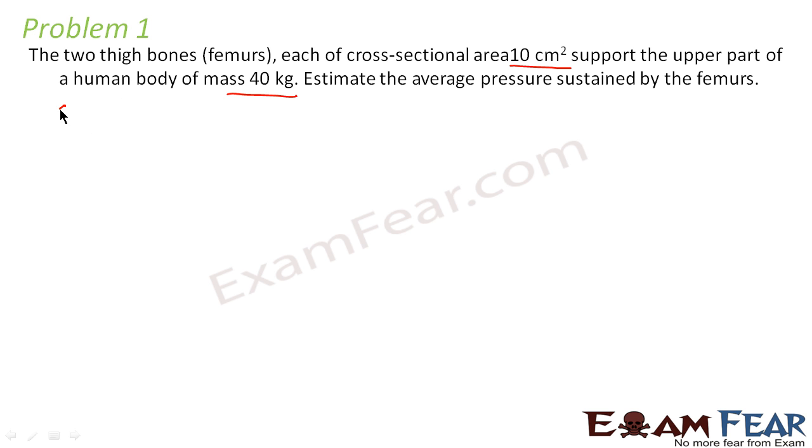Let us roughly draw a human body. Somewhat like this. It says that the two thigh bones, let us suppose the two thigh bones start somewhere from here. So these two bones, each of cross sectional area 10 cm², support the upper part of the body. The weight of this upper part is 40 kg.